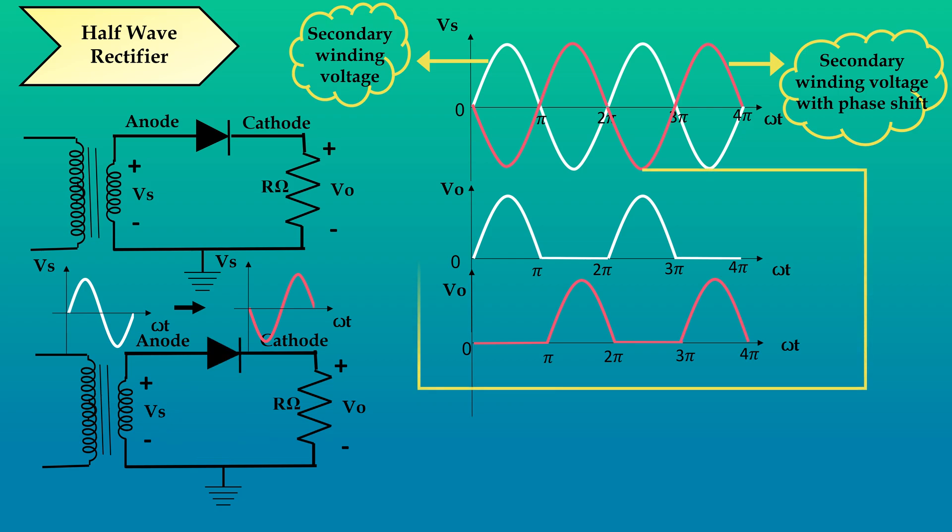Now, if we combine the output of these two circuits, we will get our required full wave rectifier output. So our full wave rectifier circuit can be designed by combining these two circuits.